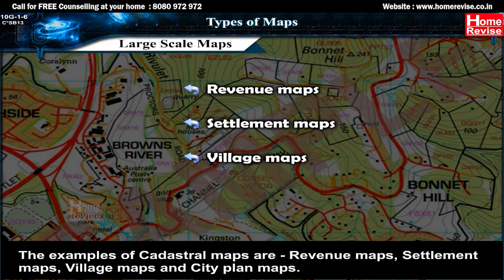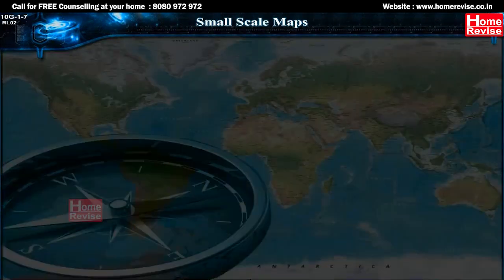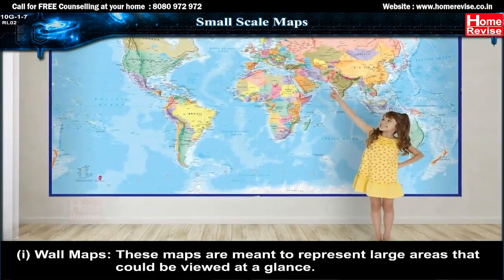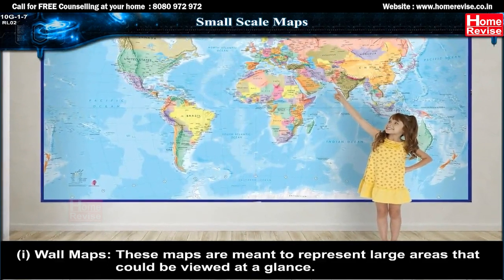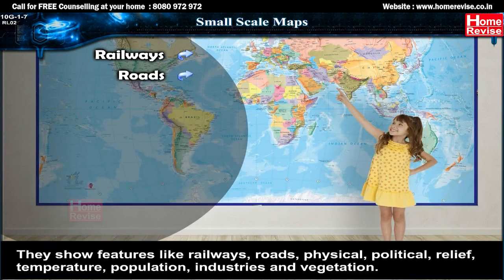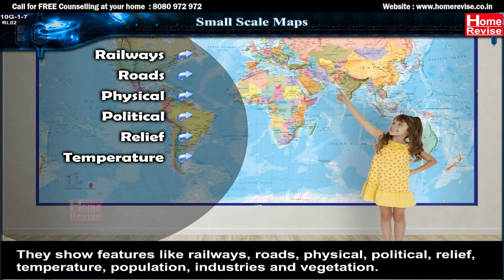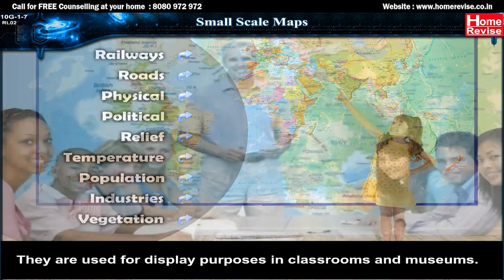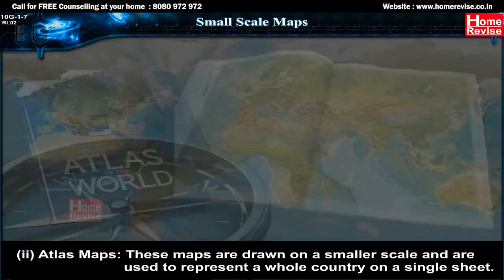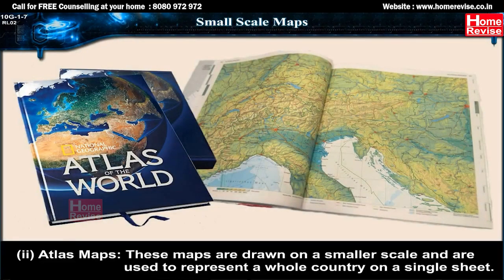Small scale maps — first: wall maps. These maps are meant to represent large areas that could be viewed at a glance. They show features like railways, roads, physical, political, relief, temperature, population, industries and vegetation. They are used for display purposes in classrooms and museums.